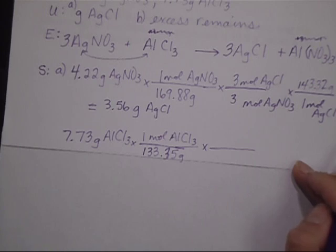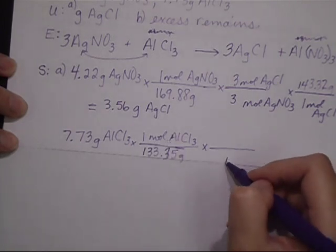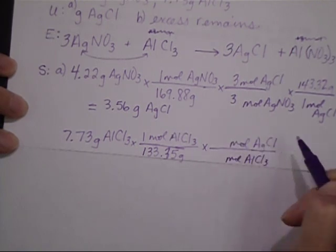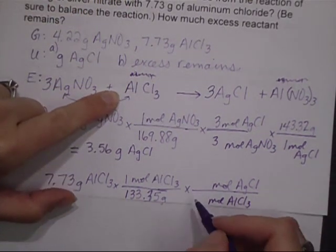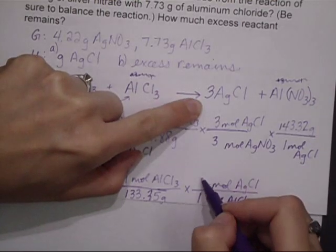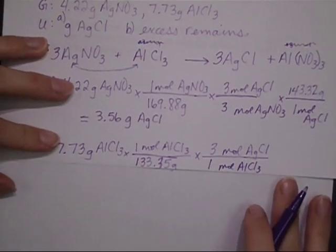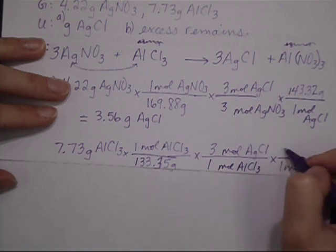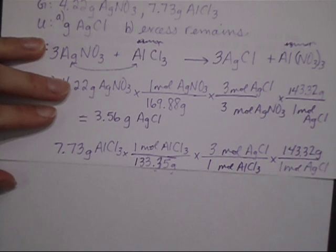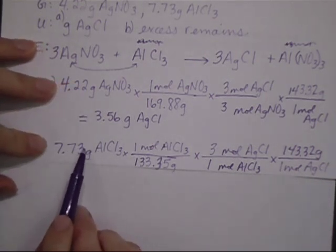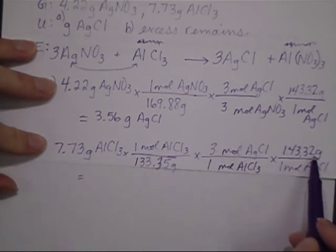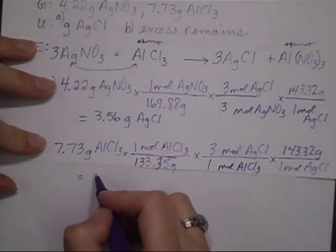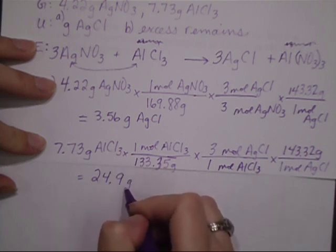It would make sense for my mole ratio now. It would make sense to solve for the same product I did before so they're comparable. Now I need a ratio between moles of AlCl3 and moles of AgCl because that's the product I'm after. Back to my equation. Here's AlCl3. There's no coefficient so that represents 1. There's a 3 in front of this so that represents 3 moles of AgCl. And then finally last but not least so I can compare in grams, 1 mole of AgCl to 143.32 grams of AgCl. Multiply across the top 7.73 times 1 times 3 times 143.32. Divided by 133.35 times 1 times 1. And you end up with 24.9 grams of AgCl.